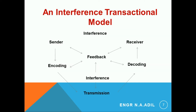In the interference transitional model, the sender's voice is encoded and at the receiver end it is decoded, but in the middle there is feedback and interference in the transmission.